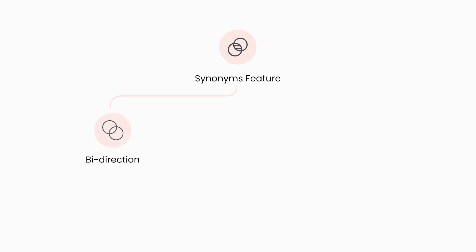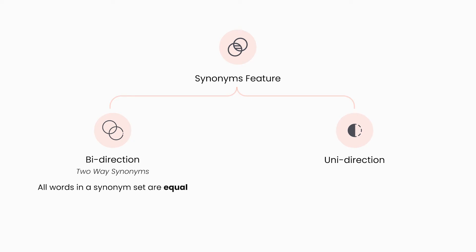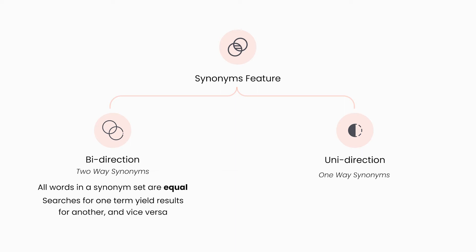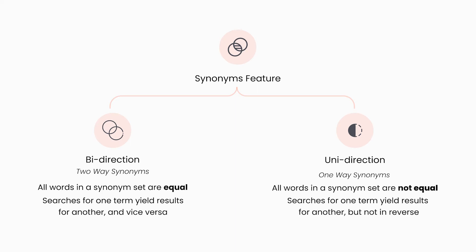In our app, synonyms are categorized into two types: bi-direction and uni-direction synonym. Bi-direction synonym, also known as two-way synonyms, works when all words in a synonym set are equal to each other. Such words are interchangeable and searching for any word will show results from all other words as well. The other kind is uni-direction, also called one-way synonym. It works when all words in a synonym set are not equal and have only a one-way relation from source word to destination word.